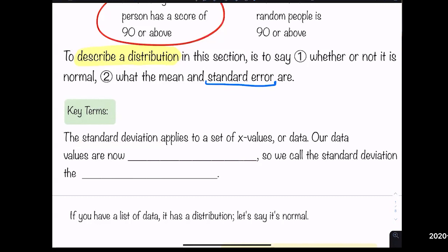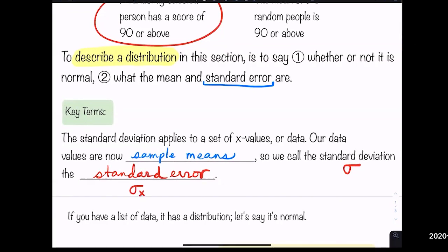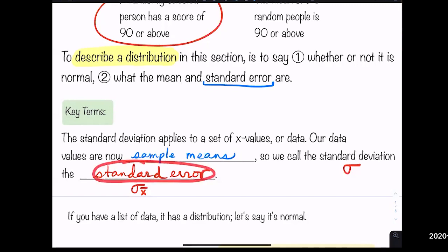Now things change — our data values are sample means, so we call the standard deviation the standard error, written as sigma sub x-bar. This is an important new term: standard error is sort of like the standard deviation, but instead of dealing with individual x values, we're dealing with sample means.